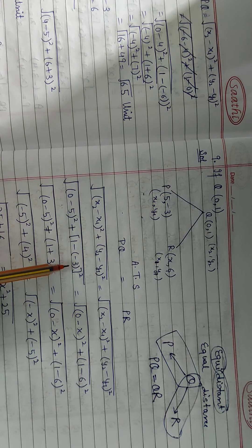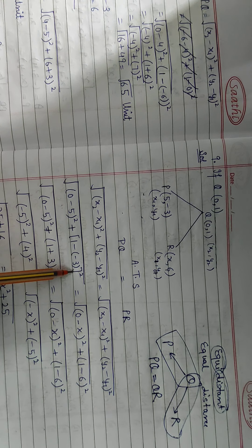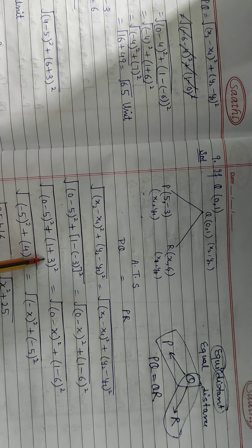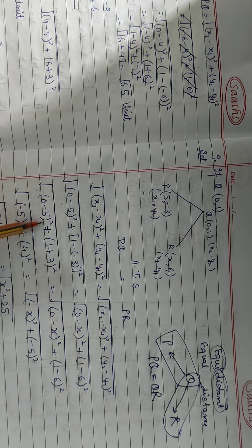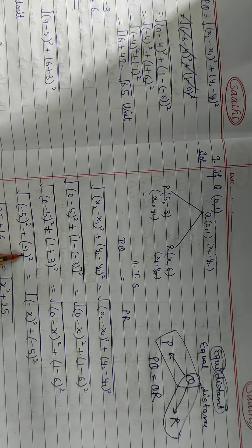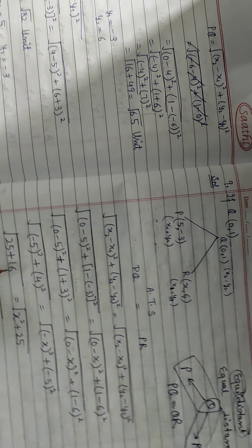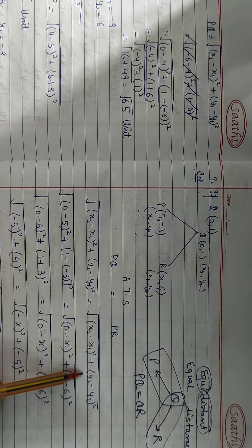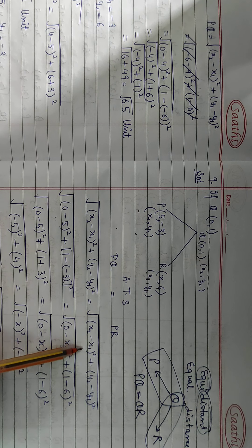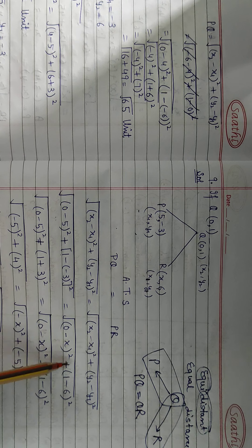For QP: x2 = 0, x1 = 5, so 0 minus 5 whole square. y2 = 1, y1 = -3, so 1 minus (-3) whole square. That gives us 0 - 5 = -5, and 1 + 3 = 4. So 5 squared is 25, 4 squared is 16, giving root of 41. QP = √41.